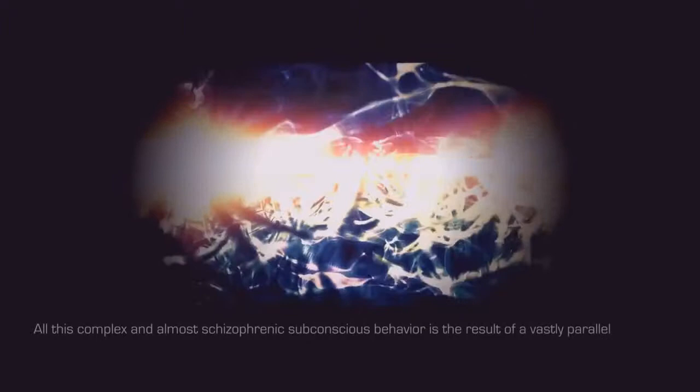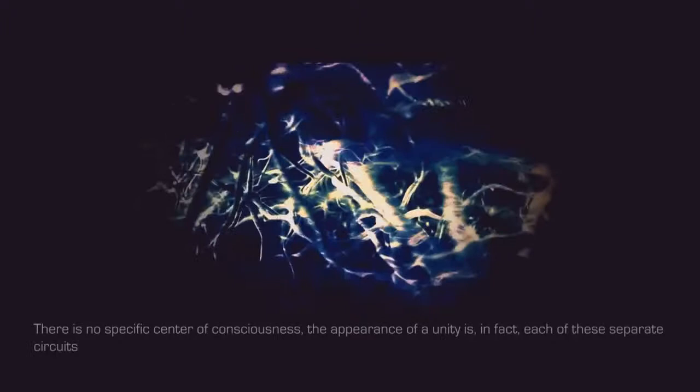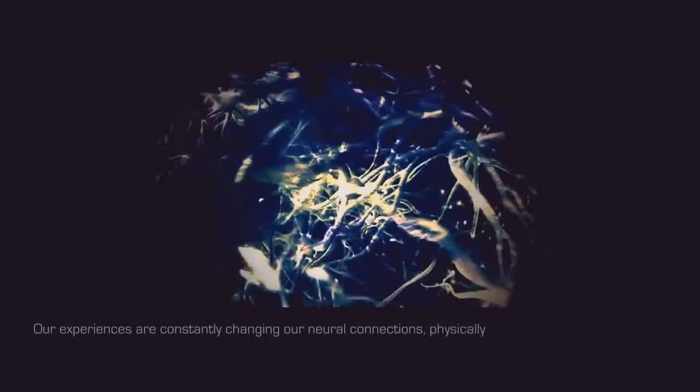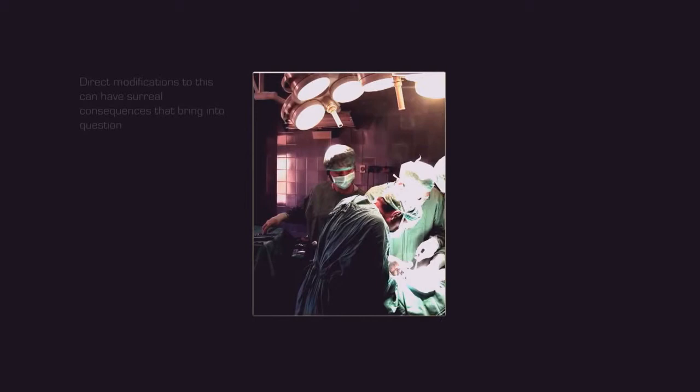All this complex and almost schizophrenic subconscious behavior is the result of a vastly parallel distributed system in our brain. There is no specific center of consciousness. The appearance of a unity is in fact each of these separate circuits being enabled and being expressed at one particular moment in time. Our experiences are constantly changing our neural connections, physically altering the parallel system that is our consciousness. Direct modifications to this can have surreal consequences that bring into question what and where consciousness really is.